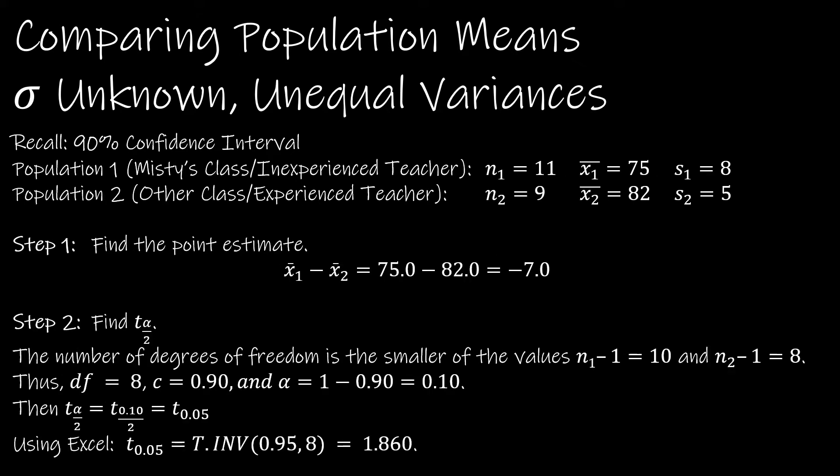I've recopied all of the pertinent information from our last slide. We have a 90 percent interval. Step one, find the point estimate, which is to subtract the two sample means. So 75 minus 82 is negative seven. That's the exact point estimate or center of our interval. So overall, Misty's class is scoring lower on average than the other class.